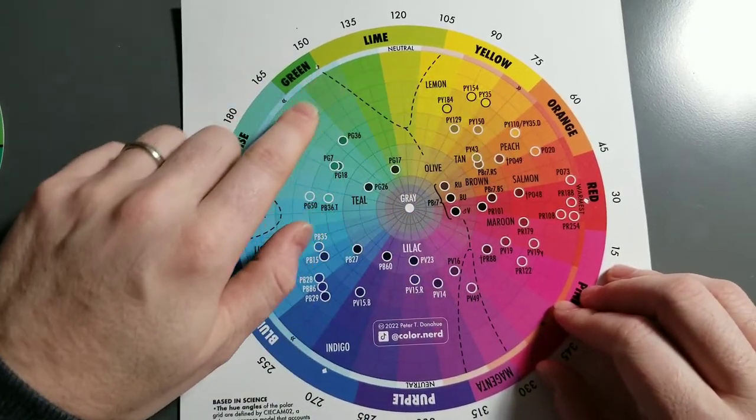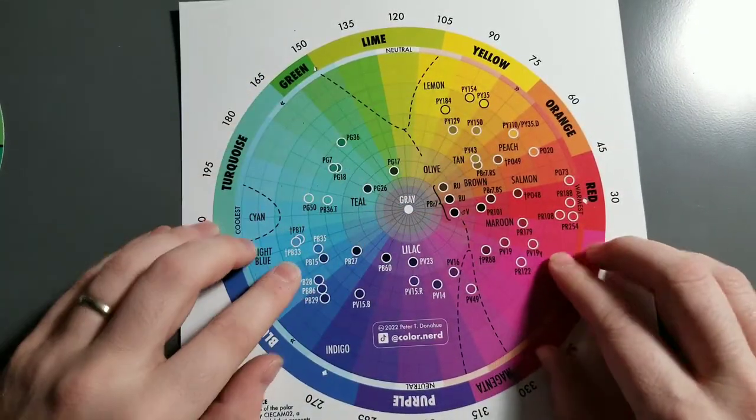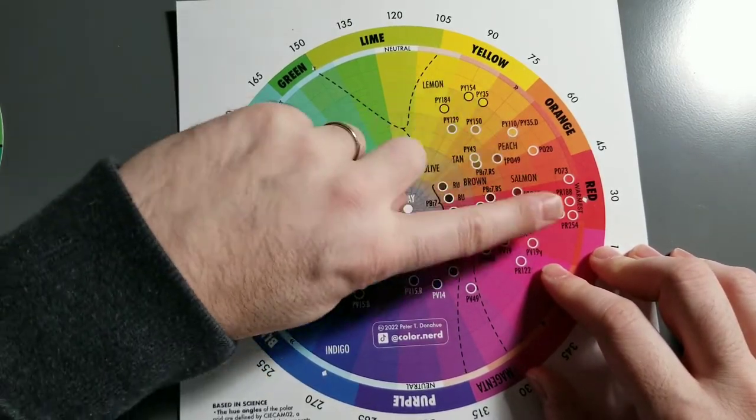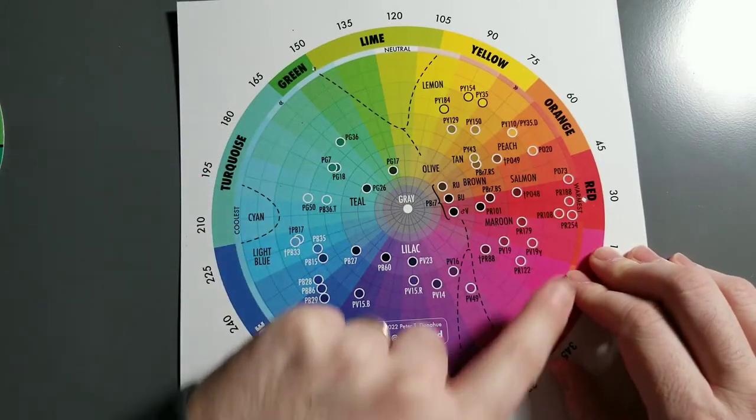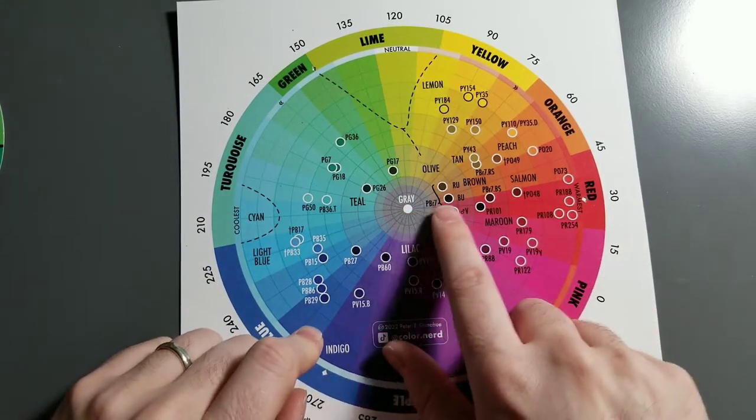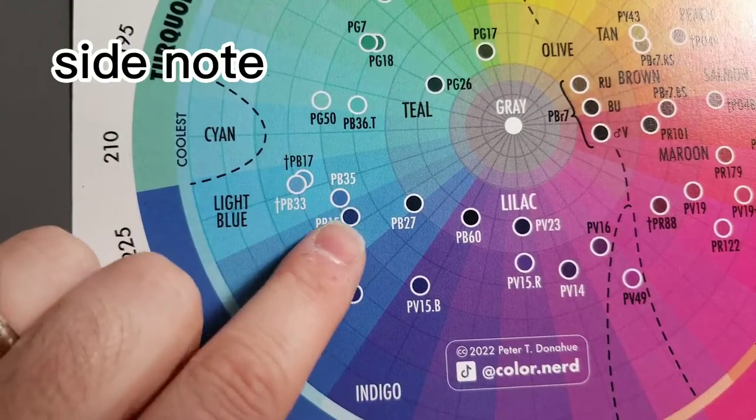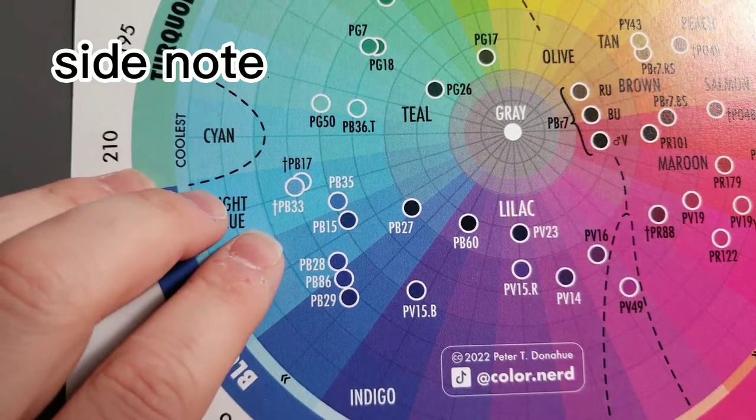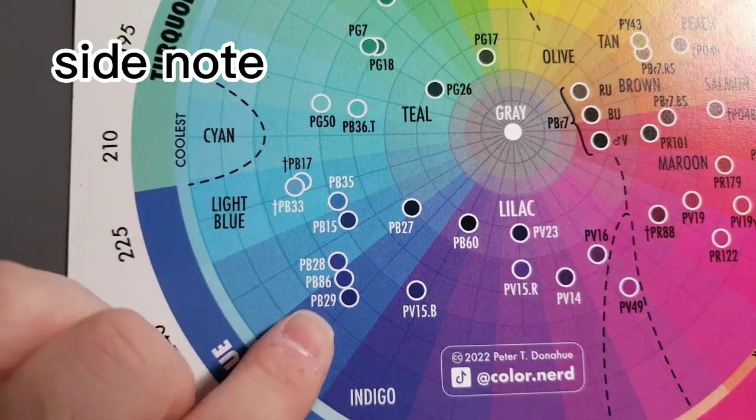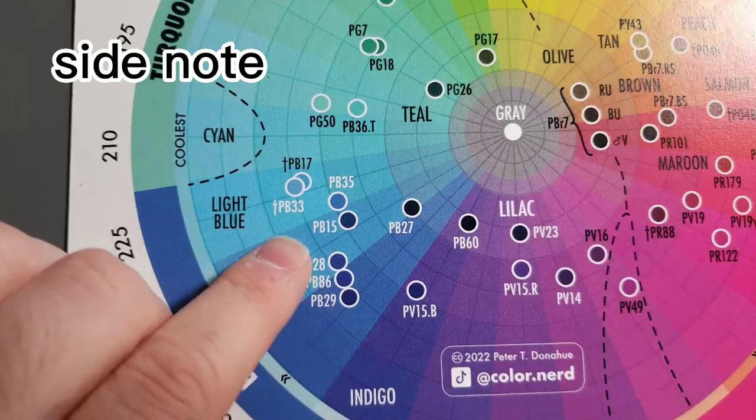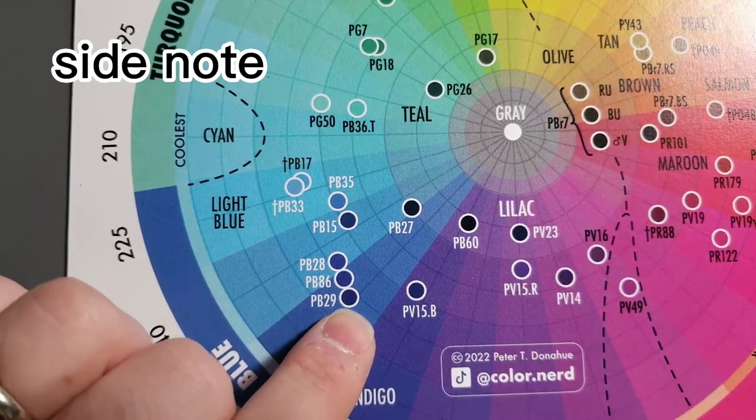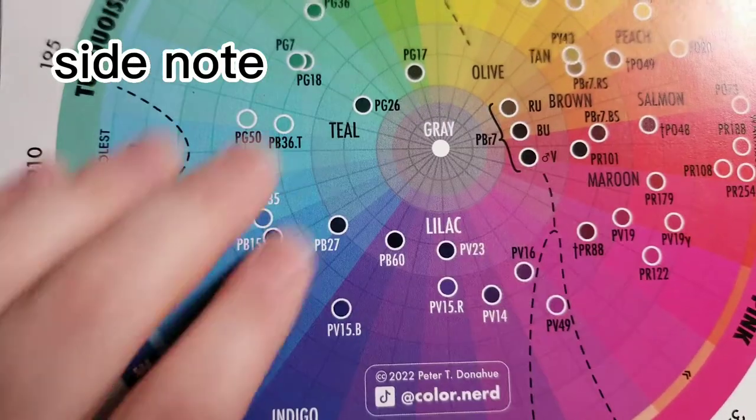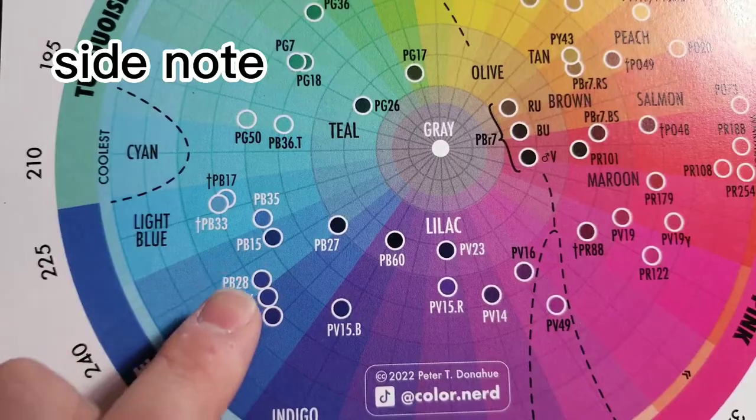The other part of this is that all of the actual pigments, not all of them, but about 50 common pigments are charted on this in terms of what hue they are, what angle they are around this color circle, and in terms of what chroma they are, or what intensity of color they have. If you're confused by all these little codes on the chart, this does come with a list of what all of these codes mean. These are just the color index codes for different pigments. PB29 is ultramarine blue, PB86 is yin-min blue, et cetera. To save space on the chart, I've used the codes rather than naming each pigment.